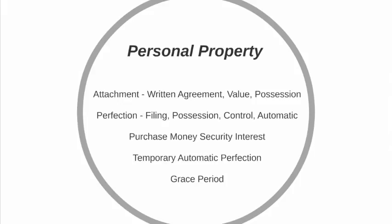We also talk about perfection and the requirements for perfecting a security interest either through filing, through possession, through control, or in some situations automatic perfection of a security interest. We introduce the concept of a purchase money security interest and how it works. We talk about the temporary automatic perfection that applies to purchase money security interest and certain other scenarios, and then we talk about the grace period allowed for an individual with a purchase money security interest to continue perfection of that security interest beyond the short statutory period provided.